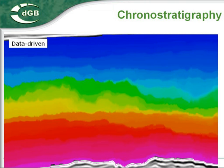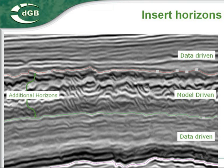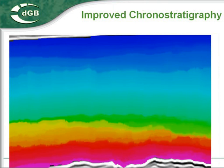The two manually picked horizons in this display mark a geologic time interval near the top of the noisy zone. It is clear that the auto-tracked grounor stratigraphy is not correct in this interval. To improve this result, we insert two new horizons — one at the top of the noisy zone and one at the base. Above and below the noisy zone, we calculate grounor stratigraphy in the data-driven mode. In the noisy interval, we use the model-driven interpolation mode. Now our grounor stratigraphy is good over the entire interval.